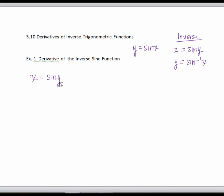We start with x equals sine y and take the derivative of each side with respect to x. The derivative of x is 1. The derivative of sine y is cosine y times y prime. Solving for y prime, we get y prime equals 1 over the cosine of y.